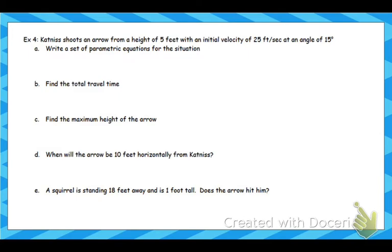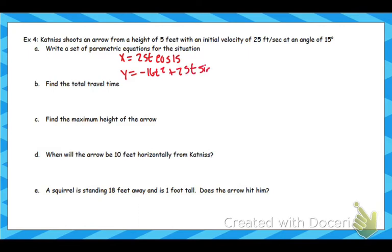So Katniss shoots an arrow from a height of 5 feet with an initial velocity of 25 feet per second and an angle of 15 degrees. So x equals 25t cosine of 15 degrees, and y equals negative 16t squared plus 25t sine of 15. We also have to include plus 5 because that's going to change this a little bit.